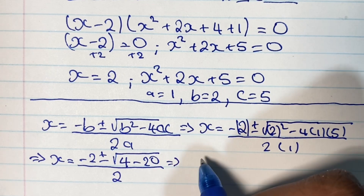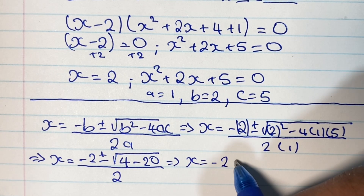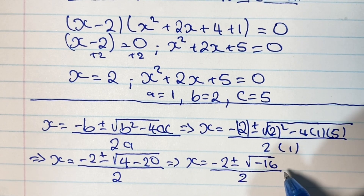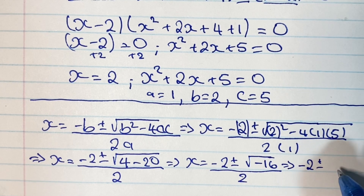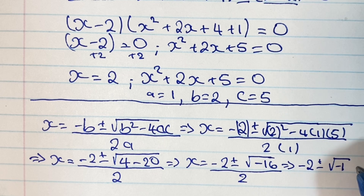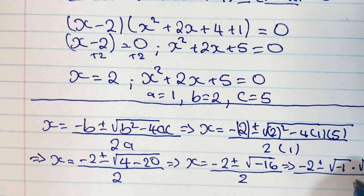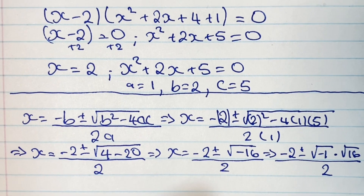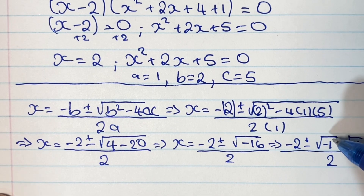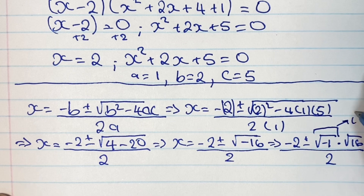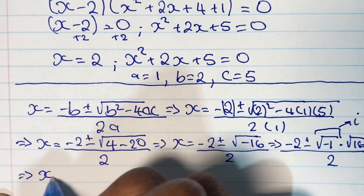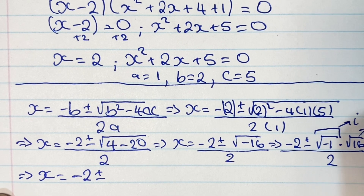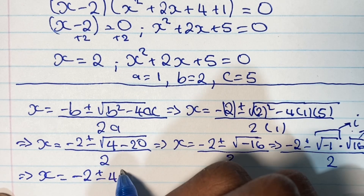Simplifying, we have negative 2 plus or minus the square root of negative 16, all over 2. We can rewrite this as negative 2 plus or minus the square root of negative 1 times the square root of 16, all over 2. Since the square root of negative 1 is i, our imaginary number, and the square root of 16 is 4, we get negative 2 plus or minus 4i, all over 2.